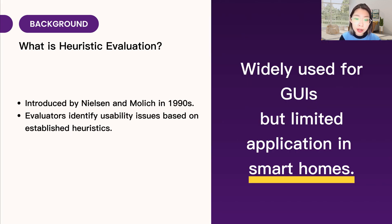Heuristic evaluation, introduced by Nielsen and Molich in the 1990s, is a method based on established guidelines for assessing usability problems. This approach involves evaluators using predefined usability heuristics to identify potential issues. While widely used for assessing graphical user interfaces in web and mobile platforms, its application to smart home systems remains relatively limited.